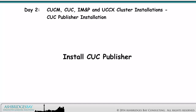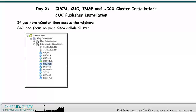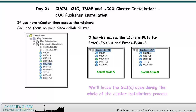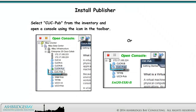The publisher must be installed first. If you have vCenter, access the vSphere GUI and focus on your Cisco Collab cluster. Otherwise, access the vSphere GUIs for Enterprise 20 ESXi-A and Enterprise 20 ESXi-B. We'll leave the GUIs open during the whole cluster installations process. Select CUCPUB from the inventory and open a console using the icon in the toolbar.